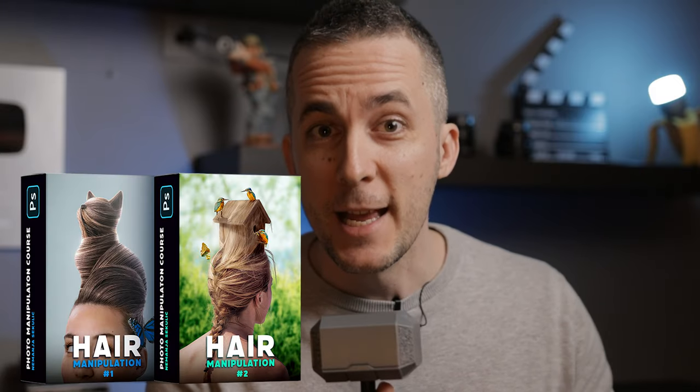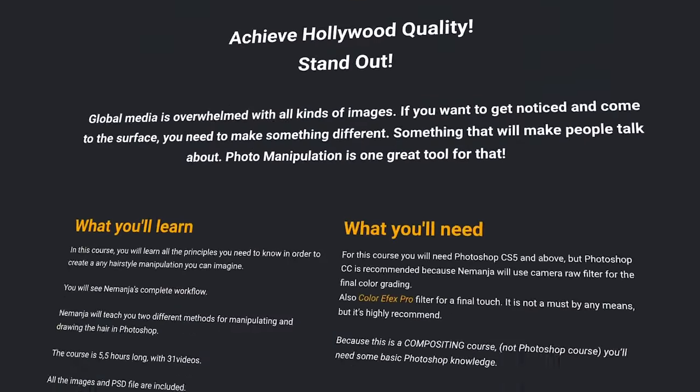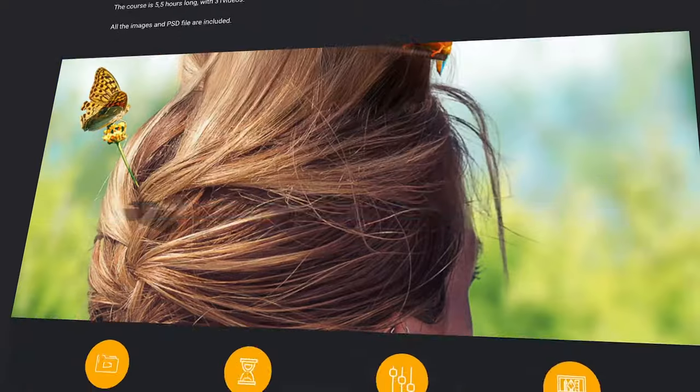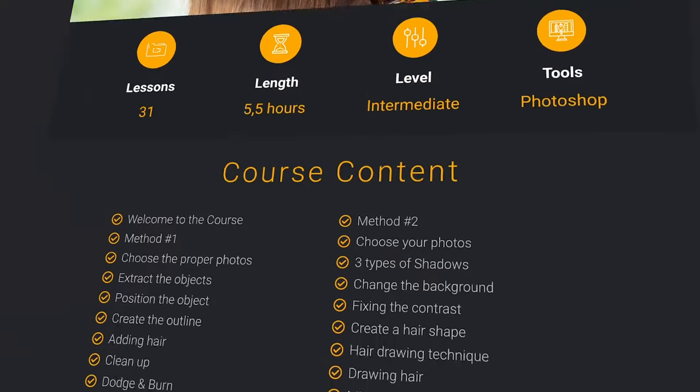The photo shoot is done. I'm really happy with the result. Now we need to do the harder part — we need to combine everything in Photoshop into a really nice final artwork. By the way, I finally finished the Photoshop hair manipulation course. If you want to learn how to create any kind of hairstyle in Photoshop, check out the link down in the description and enjoy the course.